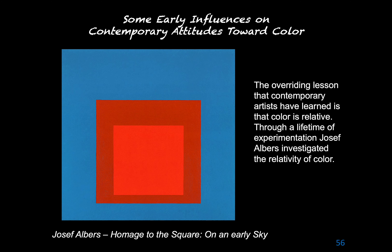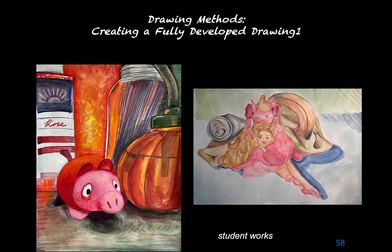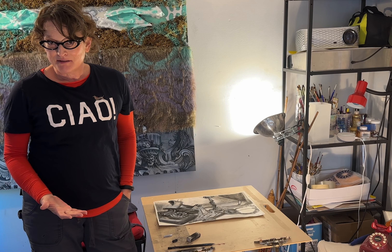The overriding lesson contemporary artists have learned is that color is relative. Through a lifetime of experimentation, Joseph Albers investigated the relativity of color — in his theoretical writing and his work he offered ample proof that color is not absolute but interacts with and is affected by its surroundings. Since colors are always seen in context and in relationship with other colors, artists must make use of this knowledge of color relationships. With the fully developed drawings you will produce, consider your concept, subject, background, composition, value, and color — all of these elements contribute significantly to the total expression of a fully developed work of art. Now let's try it out ourselves with some drawing.